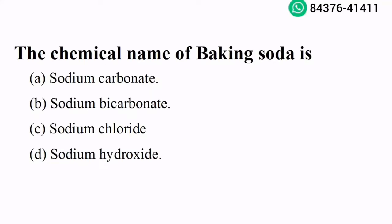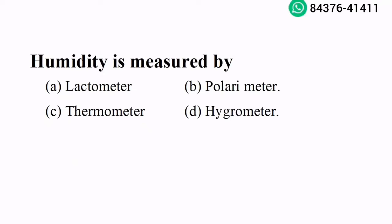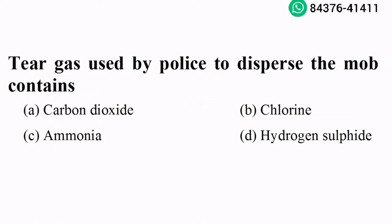The chemical name of baking soda is sodium bicarbonate. Option B is the right answer. Humidity is measured by hygrometer. Option D is the right answer. Tear gas used by police to disperse the mob contains chlorine. Option B is the right answer.